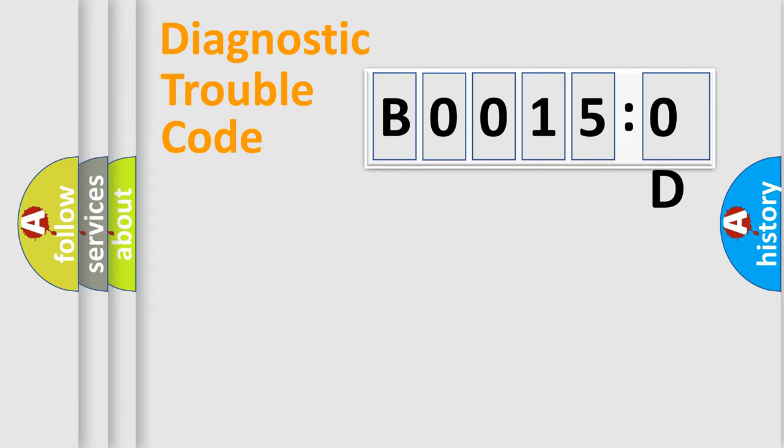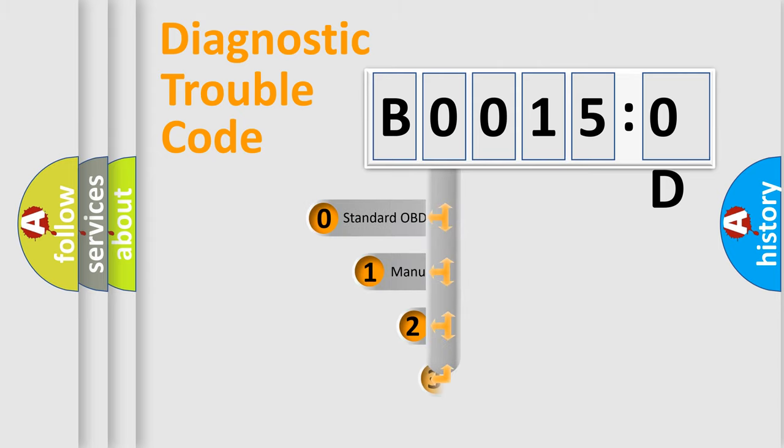Powertrain, Body, Chassis, Network. This distribution is defined in the first character code.